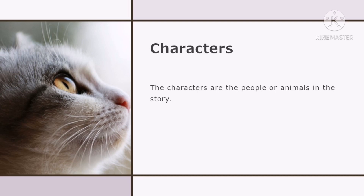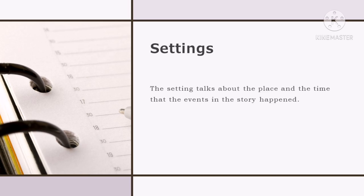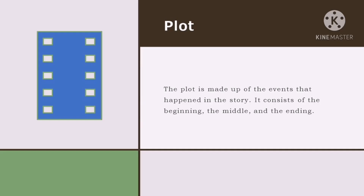When we say characters, these are the people or animals or things in the story — they act out the actions in the story. Now, setting talks about the place and the time that the events in the story happened. Now, the plot is made up of the events that happen in the story.